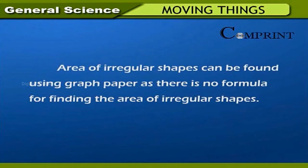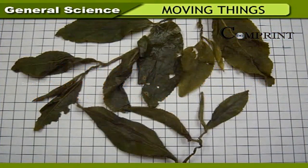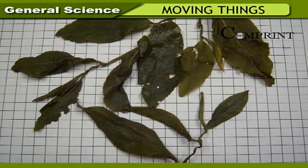The area of irregular shapes can be found using graph paper, as there is no formula for finding the area of irregular shapes. Activity — finding the area of a leaf: place a leaf on the graph paper and draw the outline of the leaf completely. Remove the leaf and count the big squares inside the outline. Count the squares which are more than half, and leave the squares that are less than half.